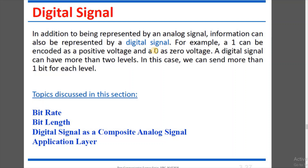We have to use 0 and 1, and we represent them using voltage. We use 0 volts and positive voltage. When we need to represent a 0, we use 0 voltage, and when we need to represent 1, we use positive voltage. The specific voltage levels are decided by the electrical engineer.